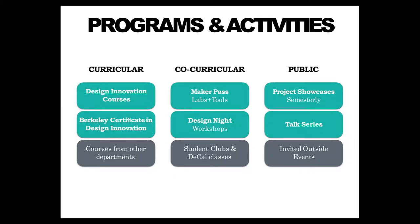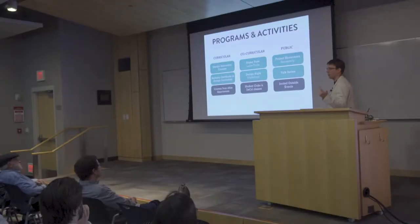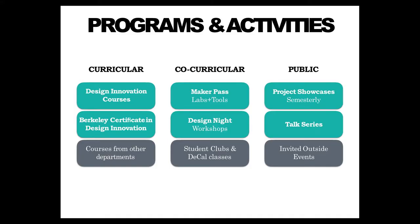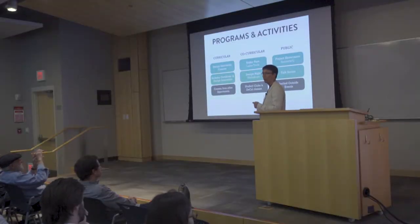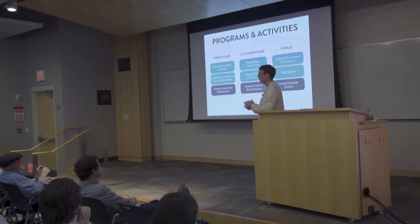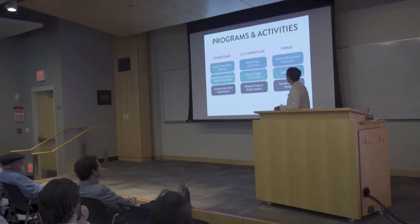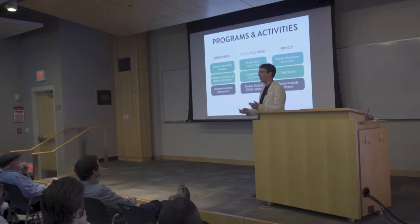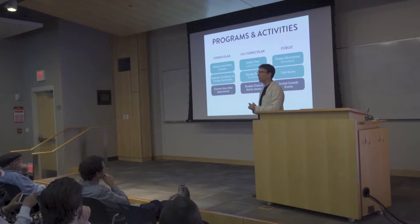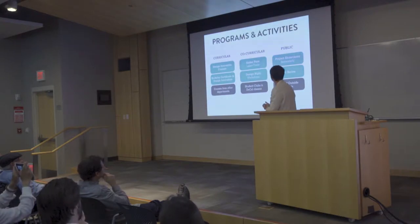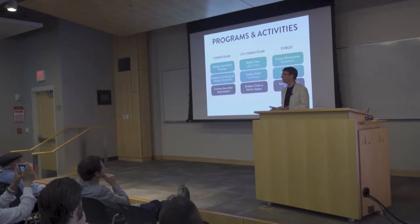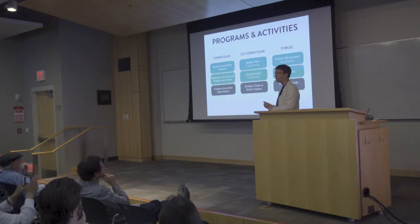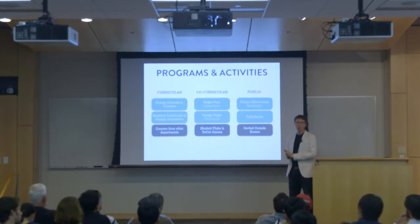Here's the 10,000-foot view of what the Jacobs Institute does. We have a curricular program, co-curricular activities, and a public-facing side. On the curricular side, we introduce design innovation courses that didn't exist at the university before, and we host courses from many other departments. We're at home in the College of Engineering but open to the entire university. Just a couple of weeks ago, we also launched the Berkeley Certificate in Design Innovation — an interdisciplinary minor-like credential for undergraduates across the university. On the co-curricular side, we run a large makerspace with the Maker Pass program giving access to tools across campus.